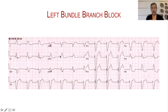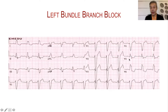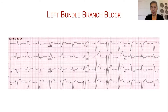In bundle branch blocks, because the initial contraction is abnormal, it will be followed by abnormal recovery and repolarization of the ventricles. Repolarization is represented by the ST segment. Normally, looking at V5 and V6, there will be ST segment depression because the ST segment repolarization will be opposite to the direction of the QRS complex. This is because of the left bundle branch block and not because of ischemia. So we read this as sinus rhythm with complete left bundle branch block.